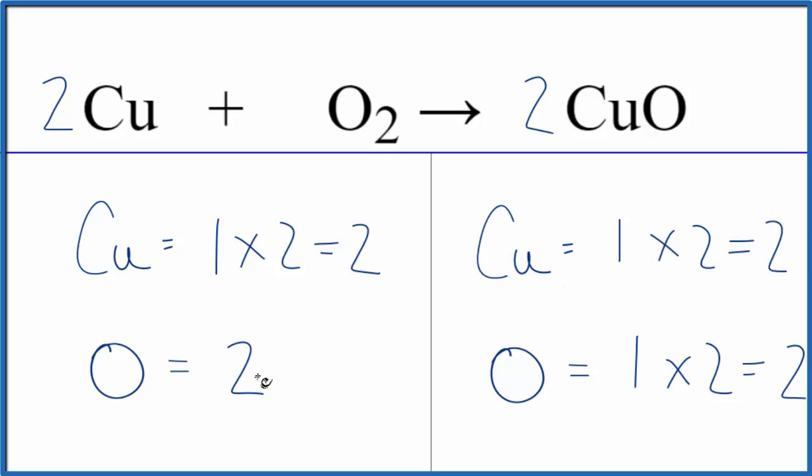And now everything is the same on each side of the equation. Two coppers, two coppers, two oxygens, and two oxygens. So this equation is balanced.